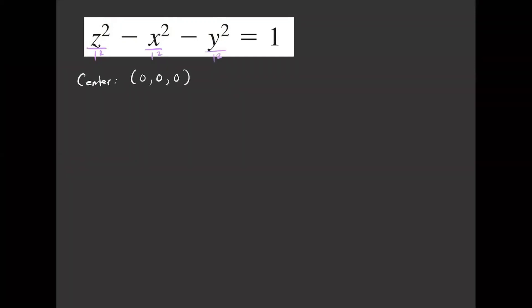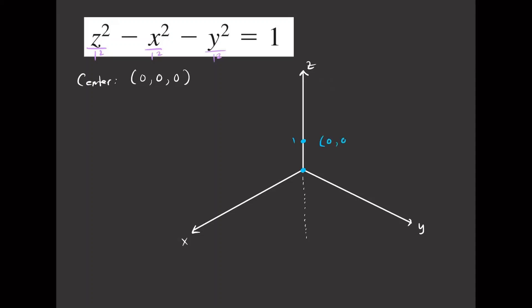Here's our sketch. The center is at the origin (0, 0, 0). Going 1 unit up gives vertex (0, 0, 1), and going 1 unit down gives vertex (0, 0, -1). We draw the first hyperbola opening upward from (0, 0, 1) and the second opening downward from (0, 0, -1).